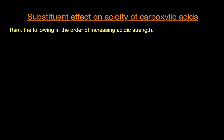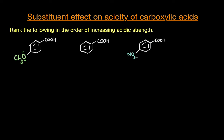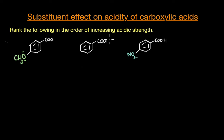Let's look at another question where we again need to rank acids in increasing order of acidic strength. The previous question had aliphatic carboxylic acids, and here we have aromatic carboxylic acids. Once again, we need to look at the conjugate bases and see which substituents would stabilize the base and which would not. So let's remove the hydrogen and replace it with a negative charge to get the corresponding conjugate bases.